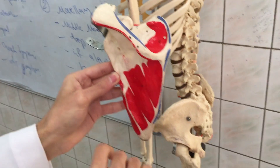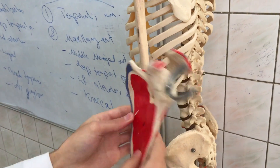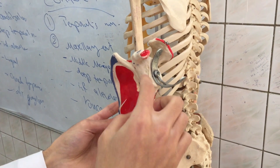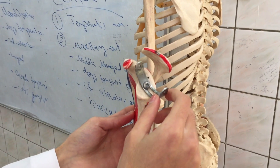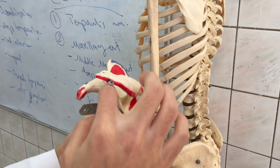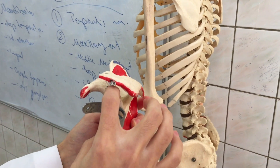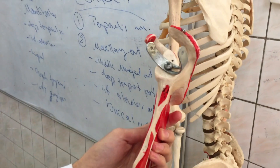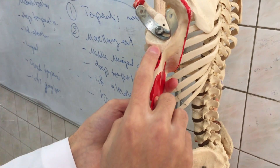Here at the upper part of the lateral border we've got a cavity which is called the glenoid cavity. At the upper surface of the glenoid cavity we've got a tubercle which is called the supraglenoid tubercle, and at the lower surface of the glenoid cavity we've got a tubercle which is called the infraglenoid tubercle.